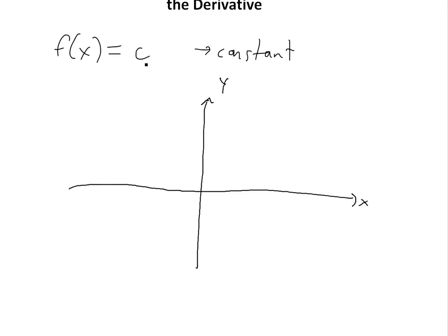So this function, this is c, it's just going to be a straight line. So let's say it's a straight line. This is c. This is y equals c. And it's c forever.